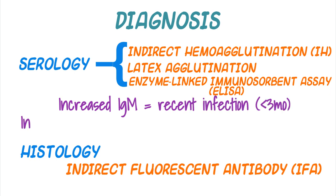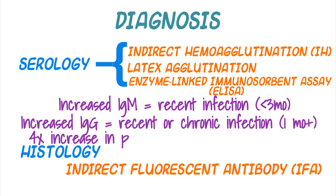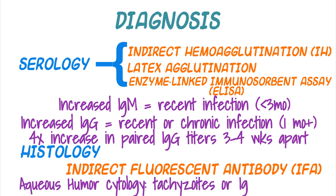IgG appears after about one month of infection and may show positive titers for years during a subclinical infection. If an animal presents with clinical disease, as with many infectious diseases, paired IgG titers three to four weeks apart are recommended, with a four-fold or more increase in titer confirming infection. Another pre-mortem technique is to look for tachyzoites or IgG in the cerebrospinal fluid or aqueous humor.